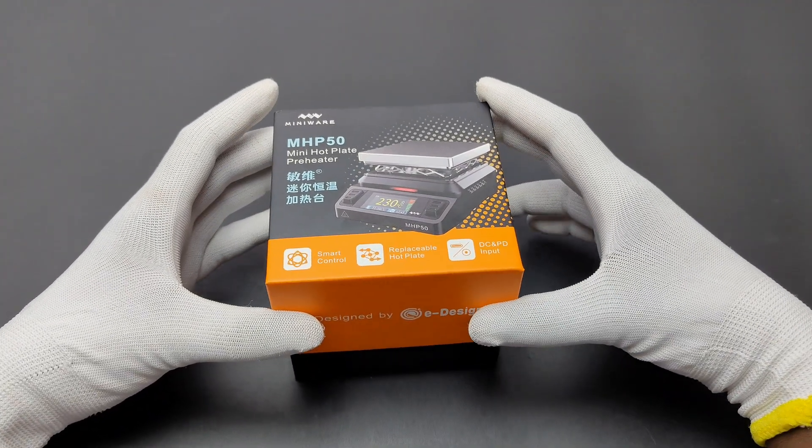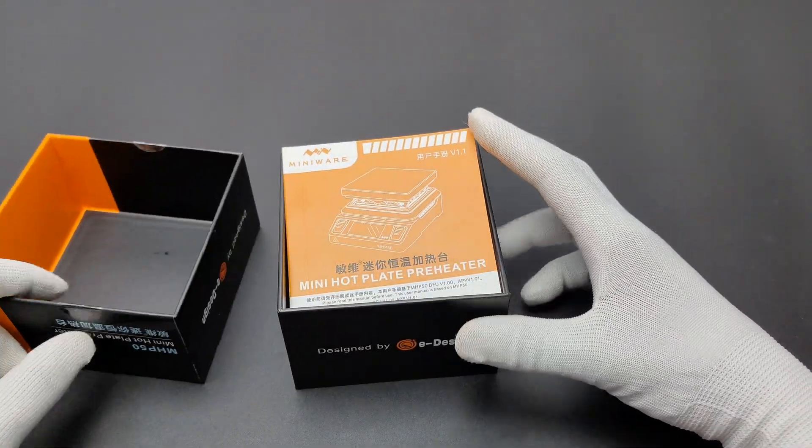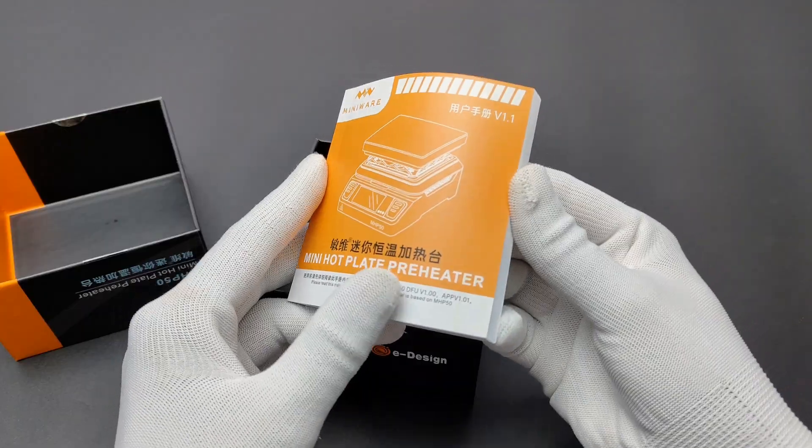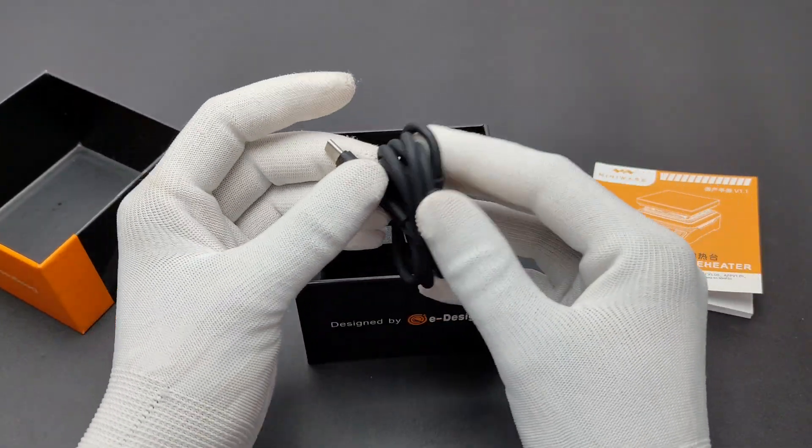Now let's open the box. It feels like I am opening an expensive smartphone. Inside the box we have the user manual first, then we got the Type-C to Type-C power USB cable.